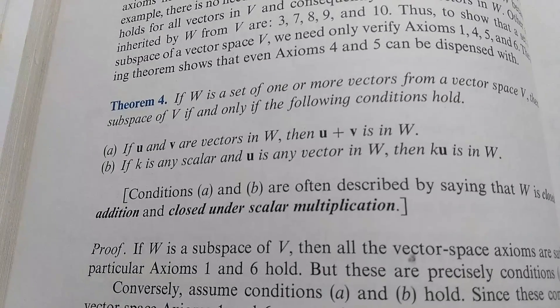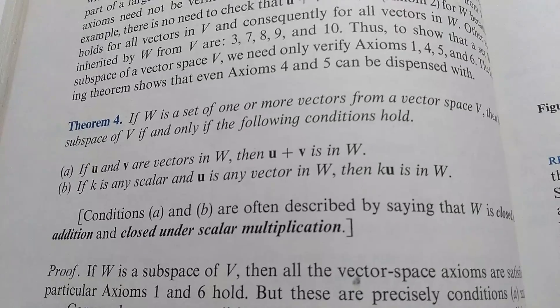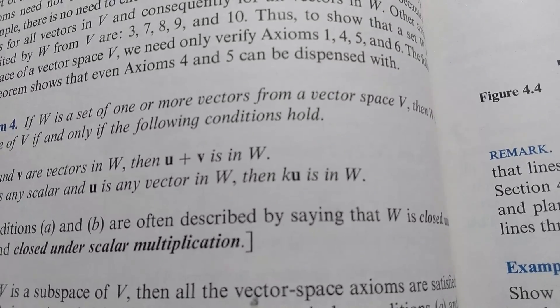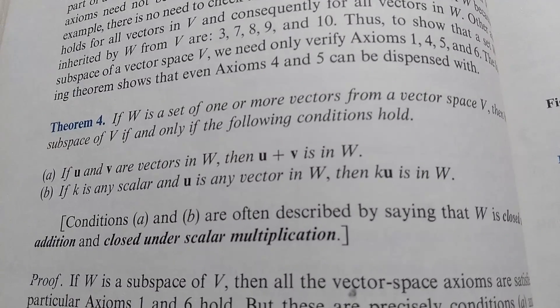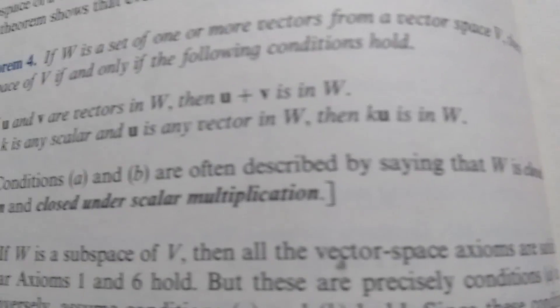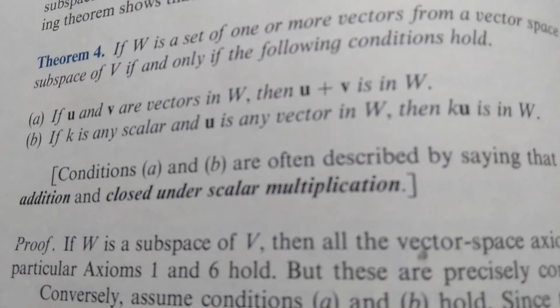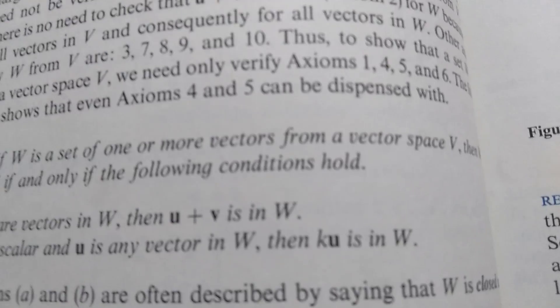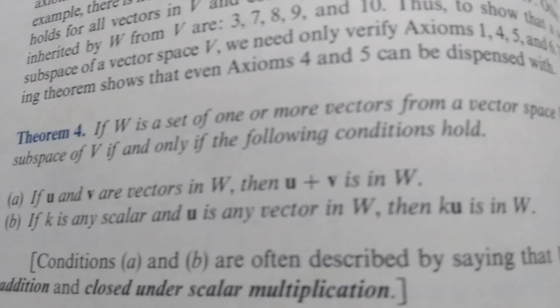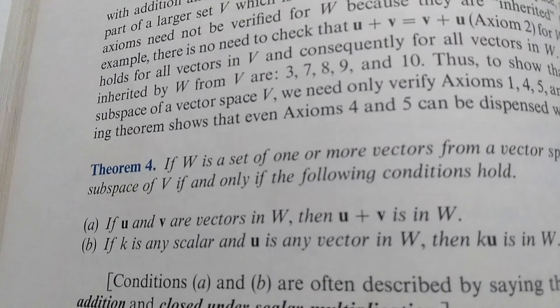If K is a scalar and U is a vector in W, then the scalar product Ku is also in W. In other words, W is closed under addition and closed under scalar multiplication. So that's typically what you use to show that something is a subspace of something else.